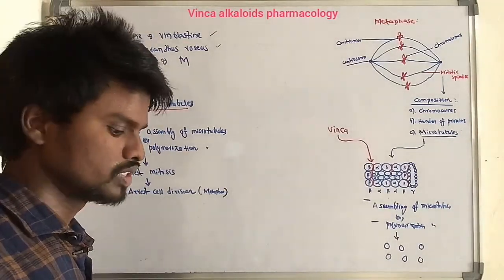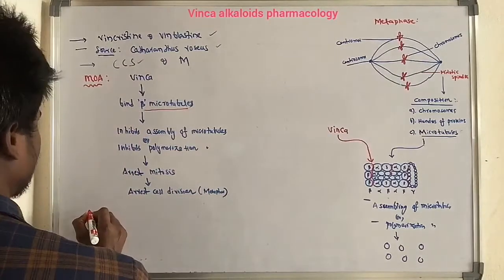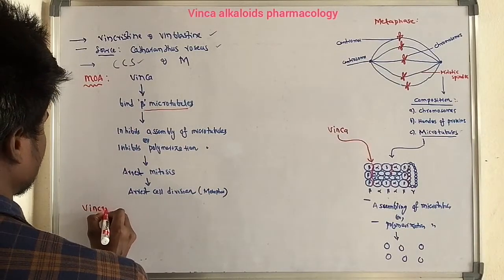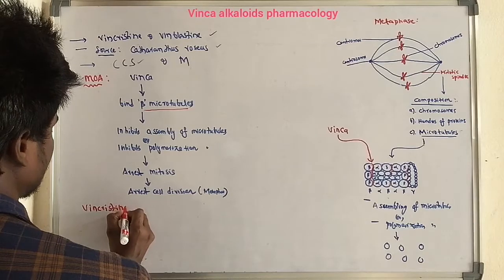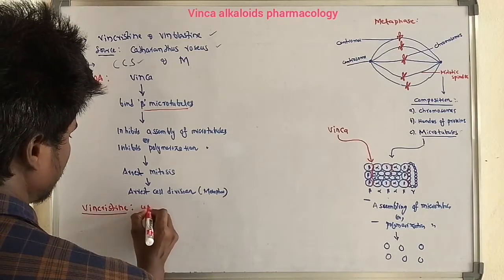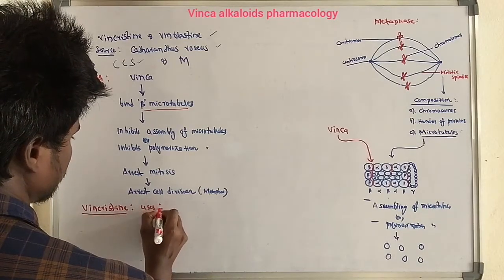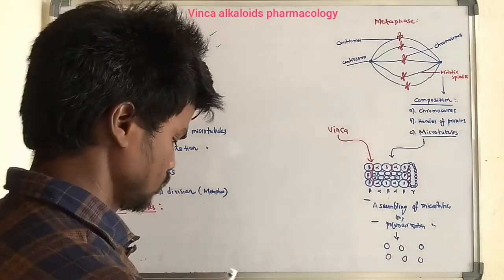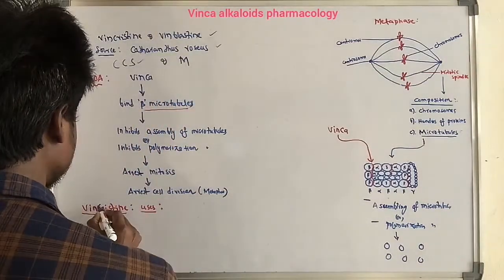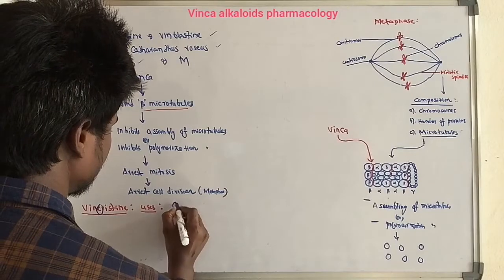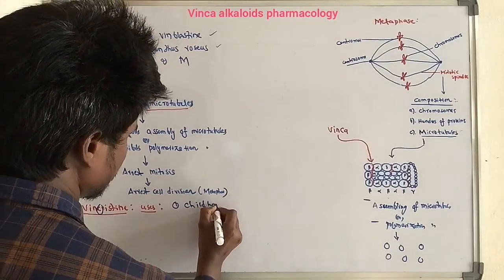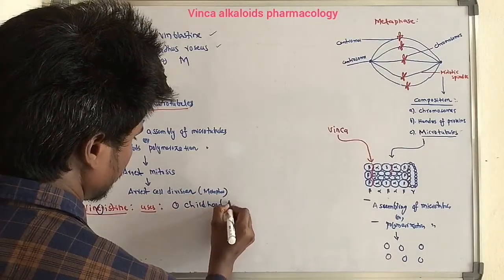Now let's look at the uses of Vincristine. For easy remembering, the 'C' in Vincristine stands for childhood leukemias — so the first use is in the treatment of childhood leukemias.